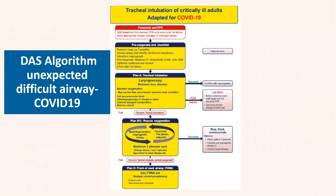With an expert intubator, good pre-oxygenation, proper sniffing position, muscle relaxation, and video laryngoscopy, these factors all increase first-pass success — which should be our target to reduce risk to staff and patient. If you have difficulty and cannot intubate, you have a maximum of three attempts. From the first failure, call for help immediately — do not wait. This is Plan A according to the DAS algorithm for unexpected difficult airway: three attempts maximum for endotracheal intubation.